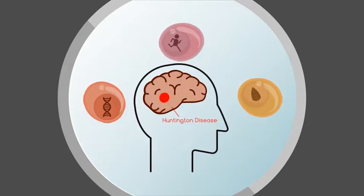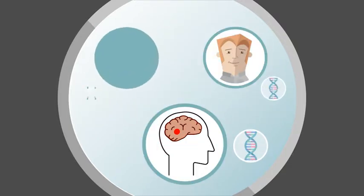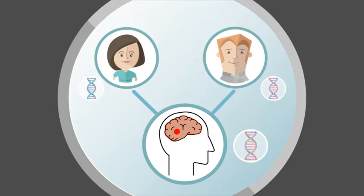Inherited disorders like Huntington disease will develop irrespective of environment and lifestyle choices because the genetic variants acquired from the parents is all that is needed to lead to a disease.